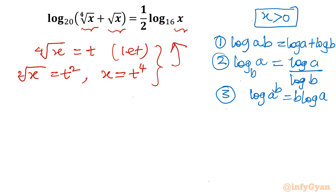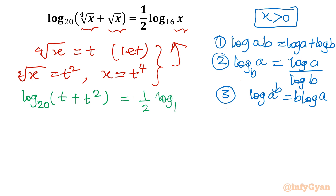After substitution, the equation becomes: log(t + t²) base 20 = half times log(t⁴) base 16. Now I will apply the log properties to both the left-hand side and right-hand side, including change of base.